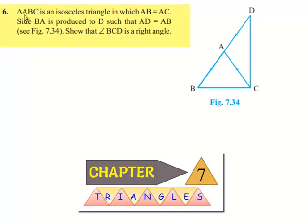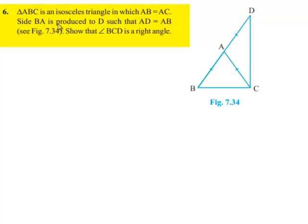In the sixth question, given that triangle ABC is an isosceles triangle in which AB is equal to AC and side BA is produced to D such that AD is equal to AB, then show that angle BCD is a right angle.